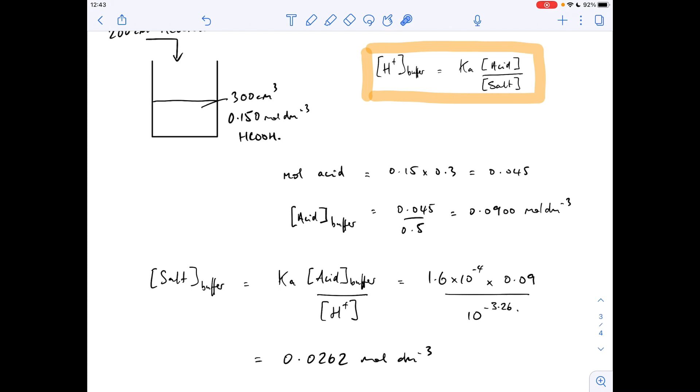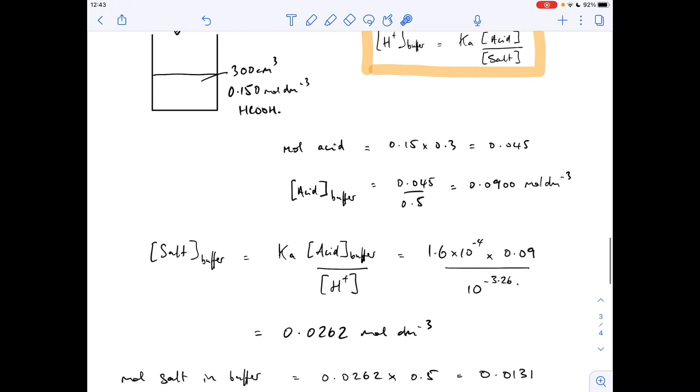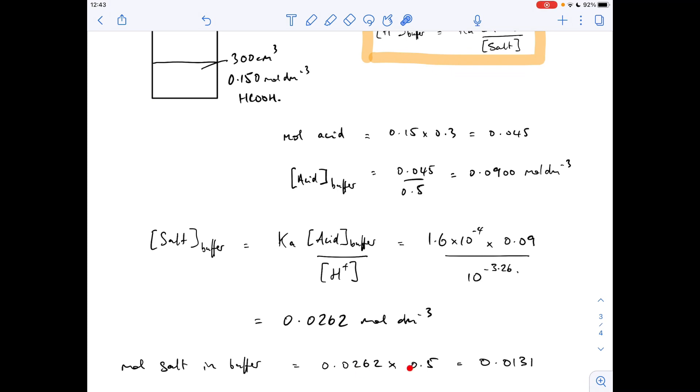Okay, we know the total volume of the buffer is 500 cm cubed or half a dm cubed. We know that the concentration of the salt is that, so we'll work out how many moles of salt need to be present: concentration times volume, 0.0131.